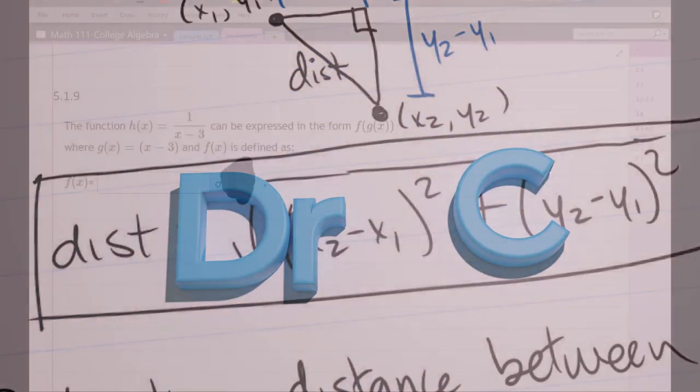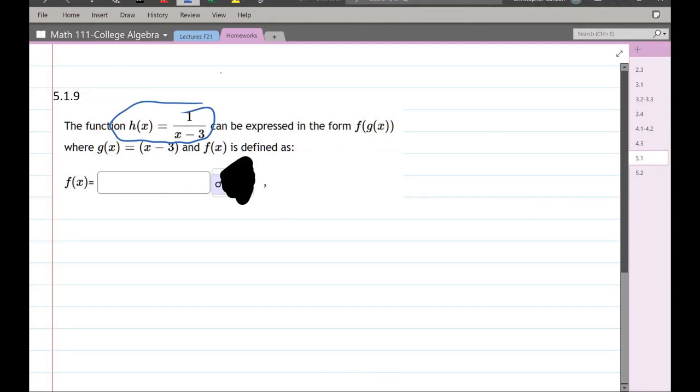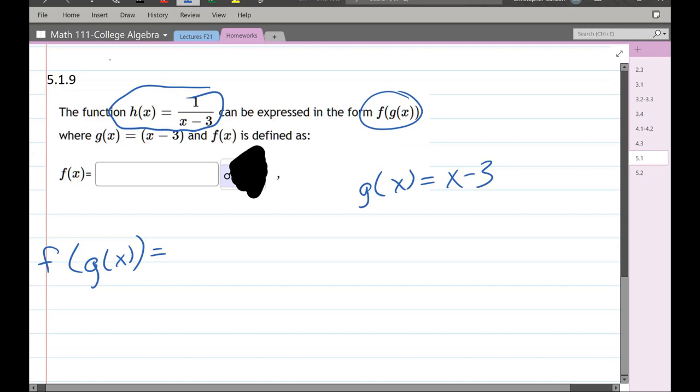This question gave us an h(x) function here, and they wanted us to write it as a composition of two separate functions. They've already told us that g(x) is x minus 3, and they want us to find a function f such that when I apply it to g(x), I get h(x) at the top.